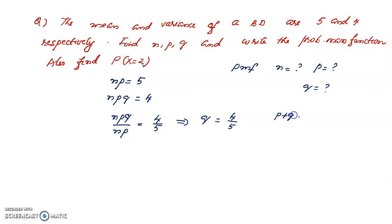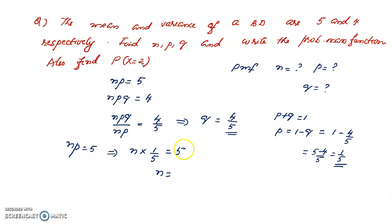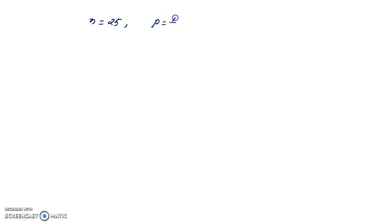Since p + q = 1, we get p = 1 − q = 1 − 4/5 = 1/5. Now using np = 5 and p = 1/5: n × (1/5) = 5, so n = 25. Therefore the random variable X follows a binomial distribution with parameters n = 25 and p = 1/5.